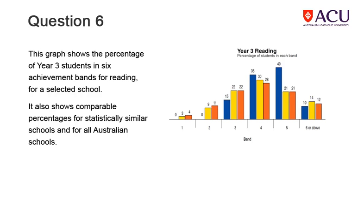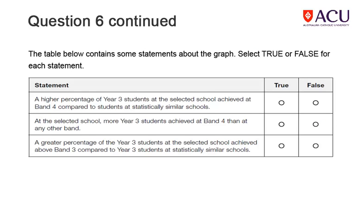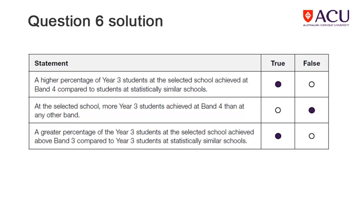Study the information presented and the column graph, which shows the performance by Year 4 students in reading at different band levels at a number of schools. The question is on the next slide. Here is a table containing three statements — write down True or False for each statement. You can use the Back button to go back to the graph as often as you want. The table shows how the correct answer would appear in the actual Lantite test, with the mouse clicked in the True or False circle beside each statement.